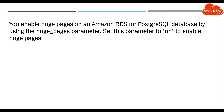You enable Huge Pages on an Amazon RDS for PostgreSQL database by using the huge_pages parameter. Set this parameter to 1 to enable Huge Pages.